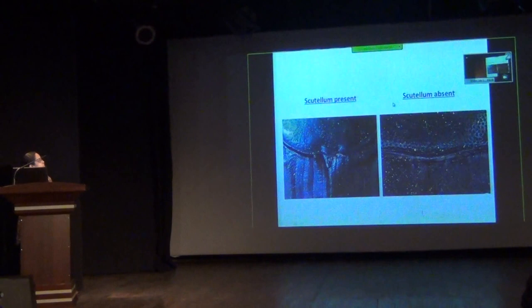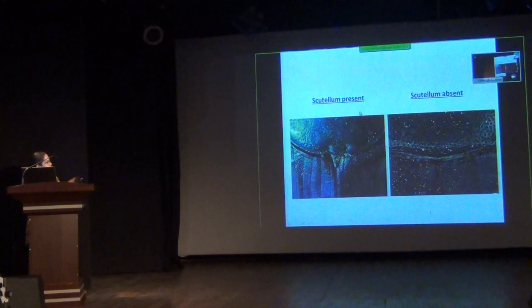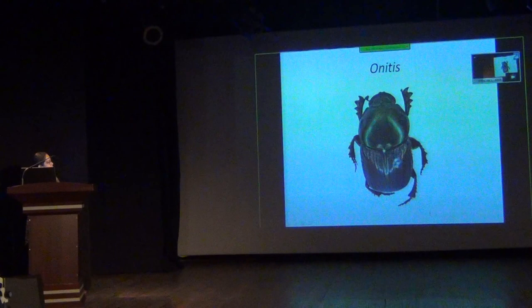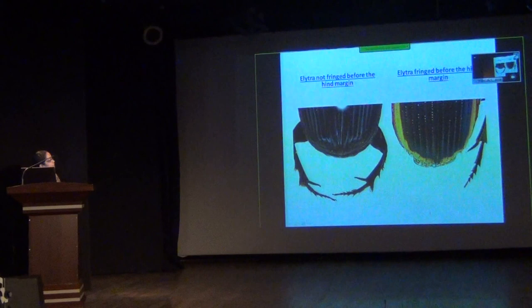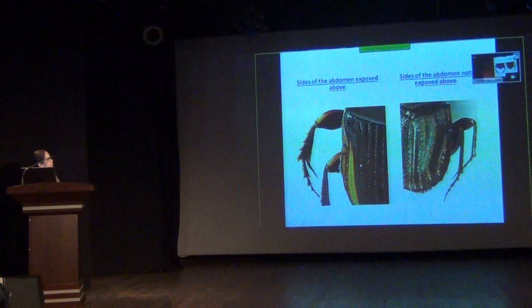The next character to check is whether a scutellum is present. All three roller genera have now been identified. If the scutellum is present and there is a basal impression on the pronotum, then it is genus Canthon. If the pronotum is without two basal impressions, you check whether the elytra has a fringe on the hind margin. If the elytra is not fringed before the hind margin, it is Liatongus.